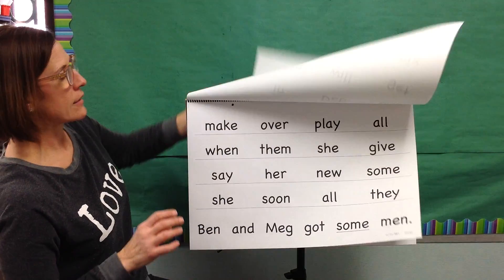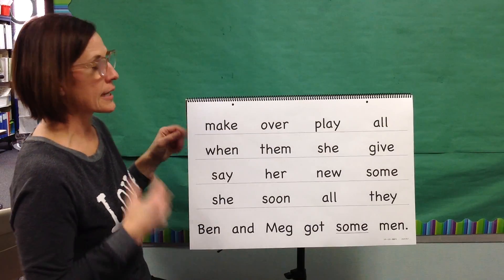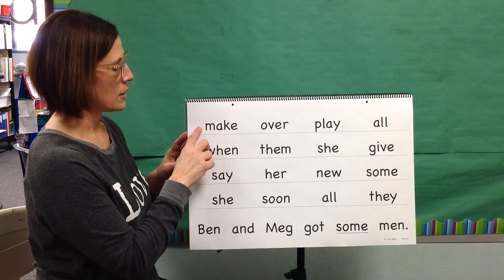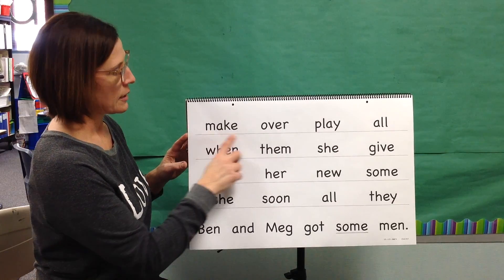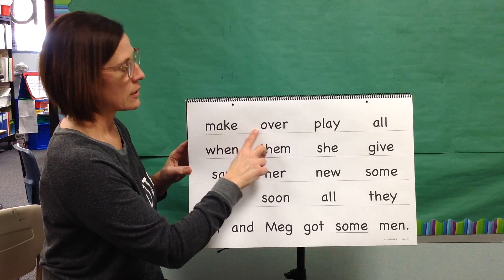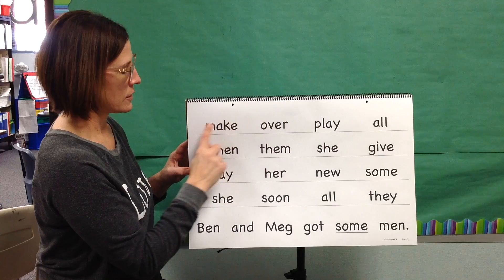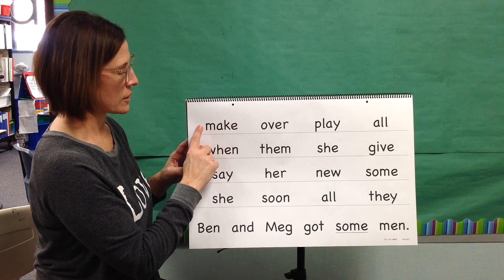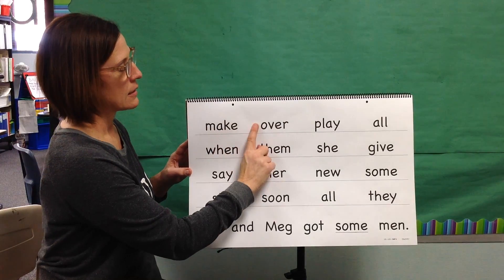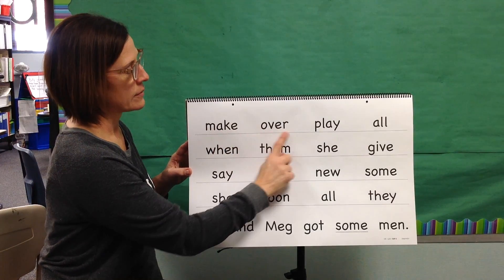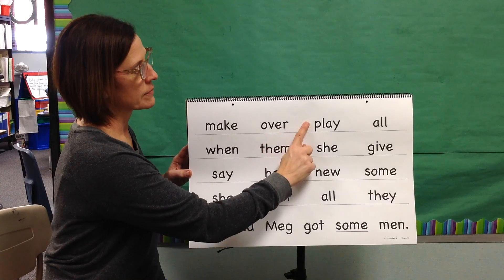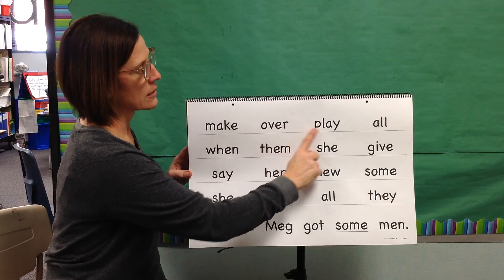Next we will read our high frequency words. I will model the first two. My turn. Word: Make. Word: Over. Your turn. Word: Make. Yes, make. Word: Over. Yes, over.